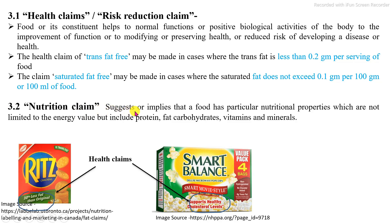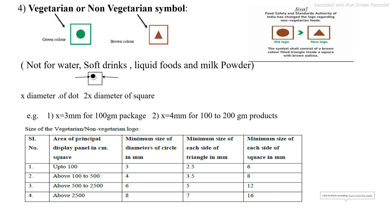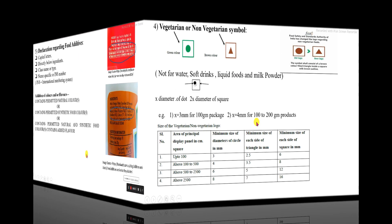Nutritional claims refer to products that have been externally enriched or fortified with specific nutrients during preparation, where the specific nutrient value is higher. Examples of nutritional claims include higher protein, specific vitamins added, or added minerals. Regarding vegetarian or non-vegetarian symbols: the green color circle with a green border indicates vegetarian. The non-vegetarian symbol has changed from the old symbol to a new symbol. For specific products like water, soft drinks, liquid foods, and milk powder, vegetarian or non-vegetarian symbols are not required.